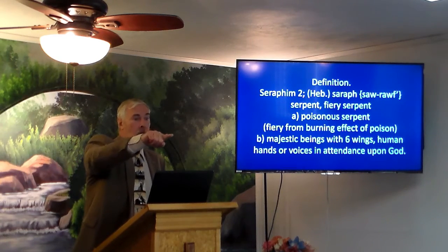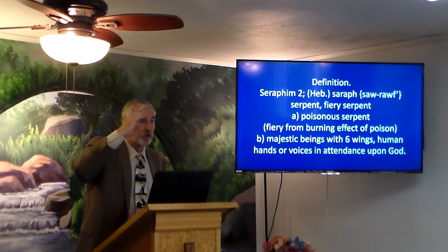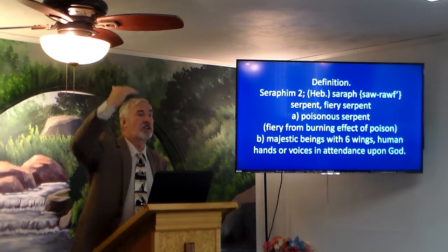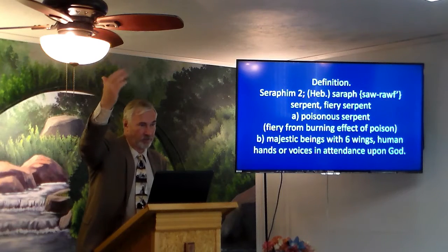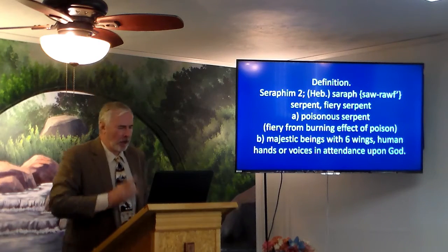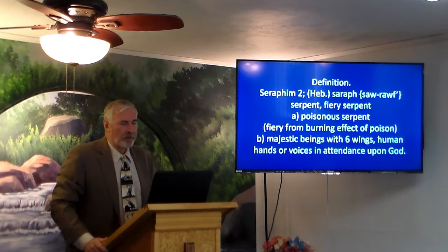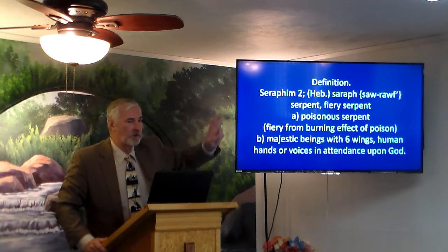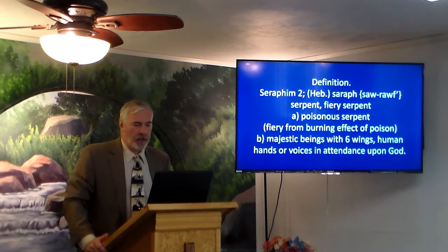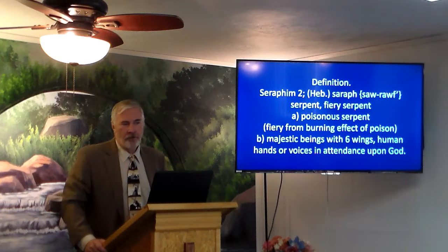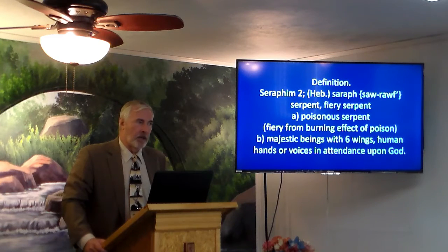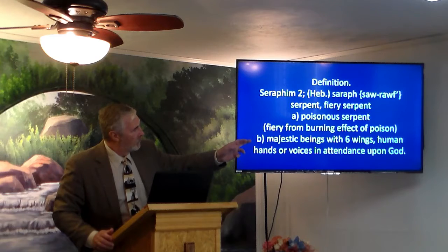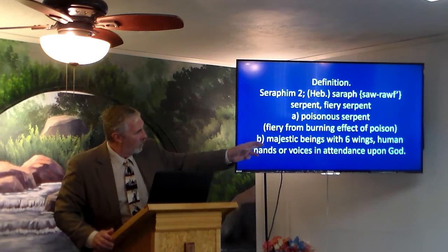Cherubim are angelic creatures in the sense that they are not of this world — they are of heavenly dimension. Third is seraphim. Seraphim are only mentioned twice in the Bible, and they come from the Hebrew word saraph, which means a serpent or fiery serpent — from the burning effect of poison, a poisonous serpent.